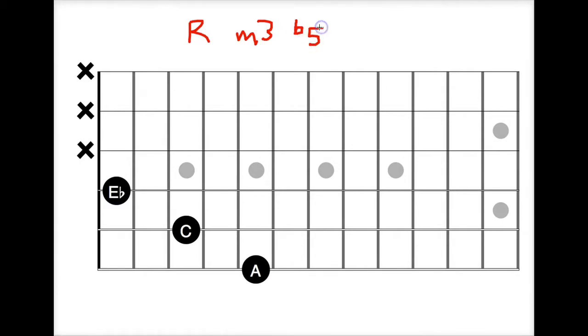And just a reminder, diminished refers to the diminishing, making the interval from the root to the fifth smaller by one half step.